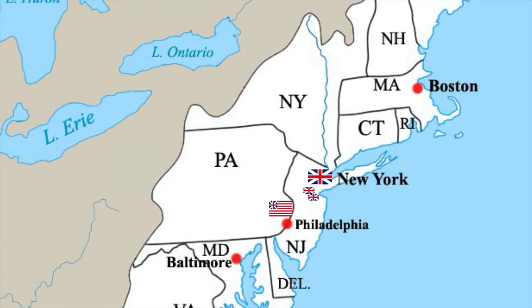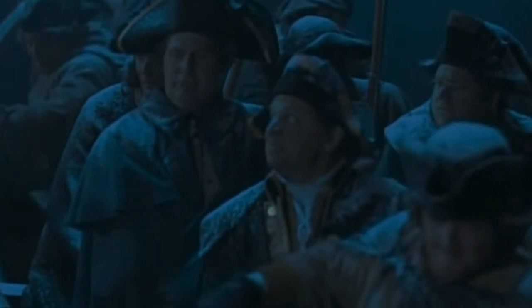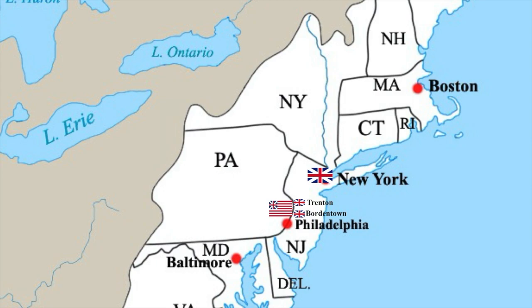Believing the Americans were done for, Howe encamped his force for the winter and set up outposts at Bordentown and Trenton. However, in a stroke of genius, on Christmas night 1776, Washington snuck his force back across the Delaware and launched a surprise attack on the overconfident British at Trenton. By daybreak, nearly 1,000 British soldiers had been taken prisoner. Though this victory was short-lived, as Cornwallis retook Trenton on January 2nd and very nearly trapped Washington's army. Washington hit back immediately with a stunning victory at Princeton a day later.